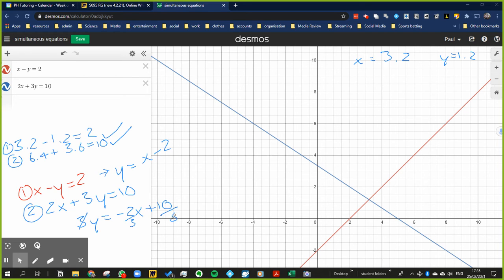And the intercept is going to be 10 over 3. So I would plot that one too. And again, like I said, the intercept is what gives you the answer to your problem. This is solving it graphically. Okay, 3.2 and 1.2. And if I plotted those two equations onto a graph or sketch them onto a graph, the intercept is going to be the solution to the problem.